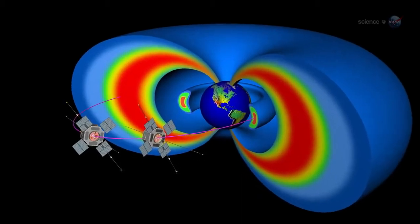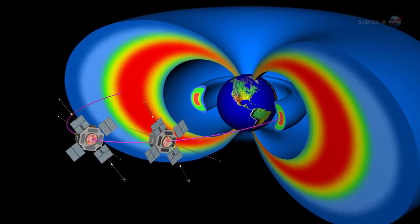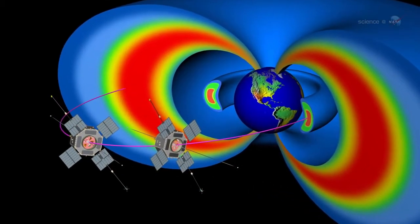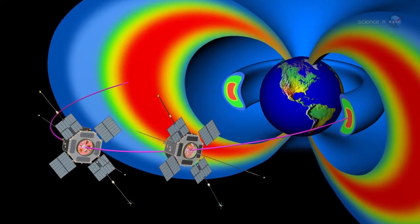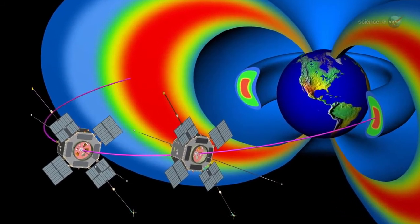Chorus emissions are front and center for the storm probe mission, says Kletzing. They are thought to be one of the most important waves for energizing the electrons that make up the outer radiation belt.